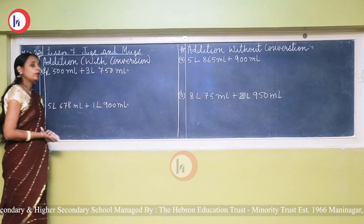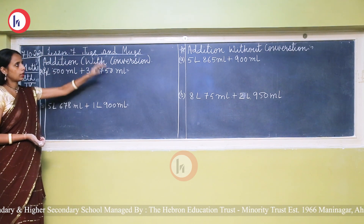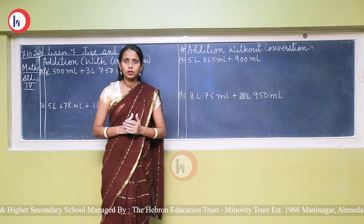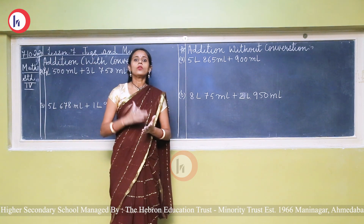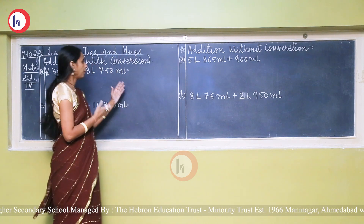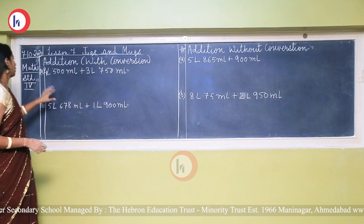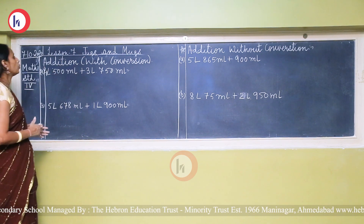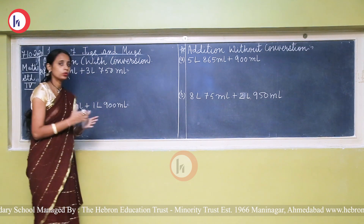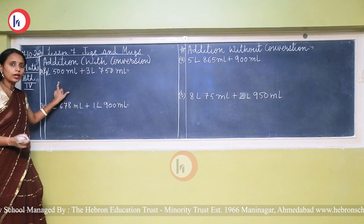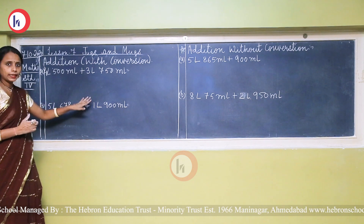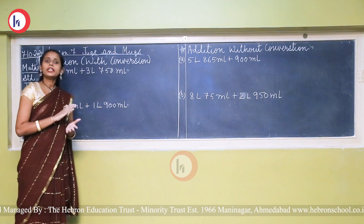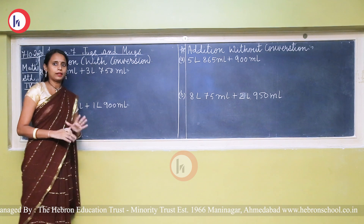Now, addition with conversion and without conversion. As explained in the chapter on length, the same idea applies here. With conversion, we first convert liters into milliliters and then add. Without conversion, there is no need to convert — we just add directly.